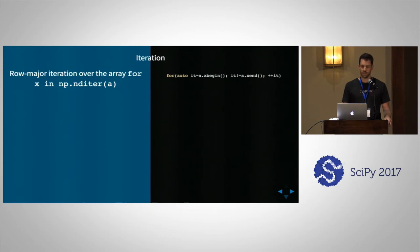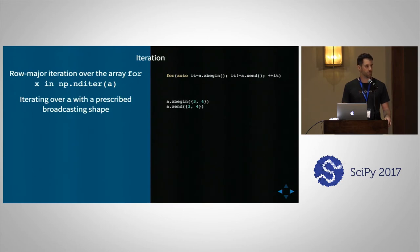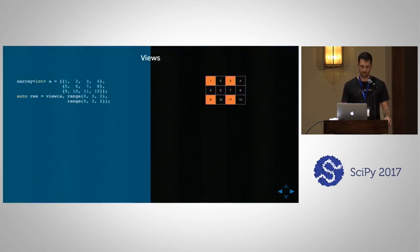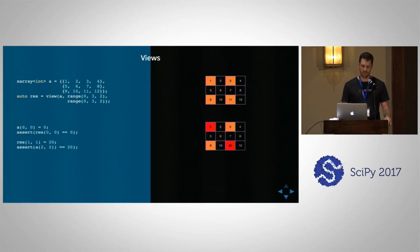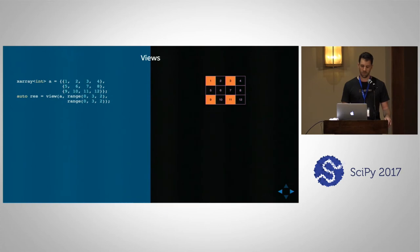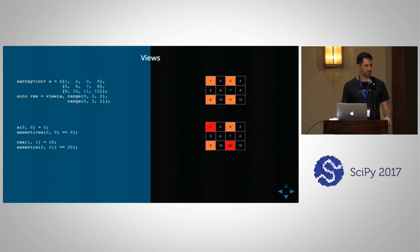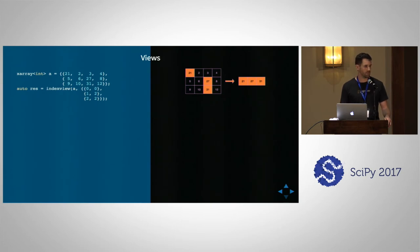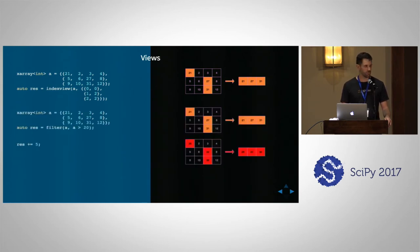We also offer various ways of iterating on tensors. We provide C++ iterator pairs following the idioms of the C++ standard library for row-major and column-major iterations. You can also iterate over a prescribed broadcasting shape. We support views — for example, defining a view on a 2D array with two slices, where changes to the view also modify the underlying array. The same holds for multiple ways of doing slices and ranges in arrays.